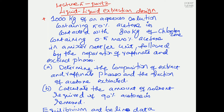We have 1000 kg of an aqueous solution, and this solution contains 50% acetone by weight — so 50% is acetone and the remaining 50% is water, giving 1000 kg total. We are going to contact this solution with 800 kg of chlorobenzene as our solvent, which contains a tiny bit of acetone — 0.5 mass percentage. Water is our carrier liquid, and we need to remove acetone from water using chlorobenzene as the solvent.